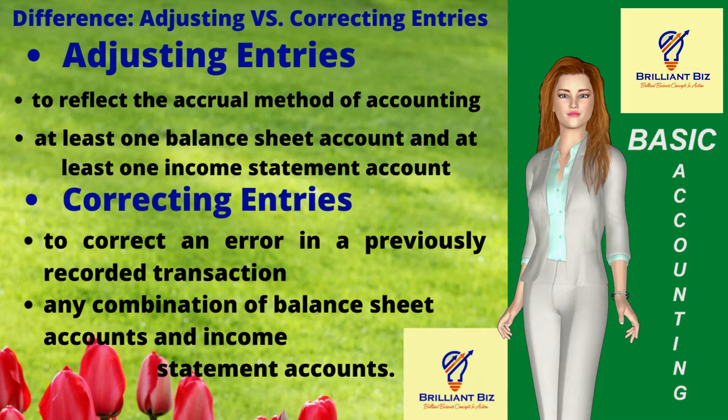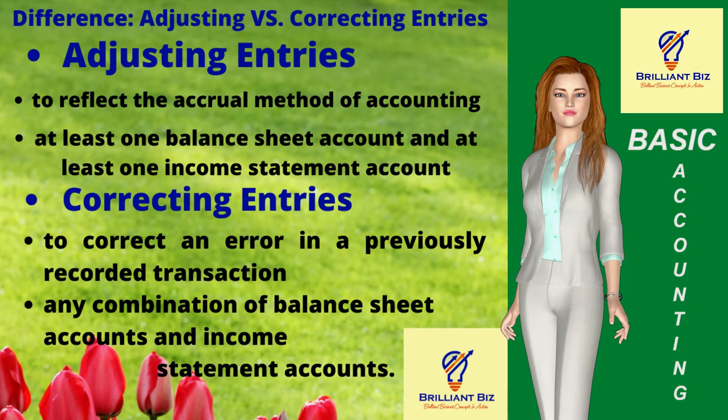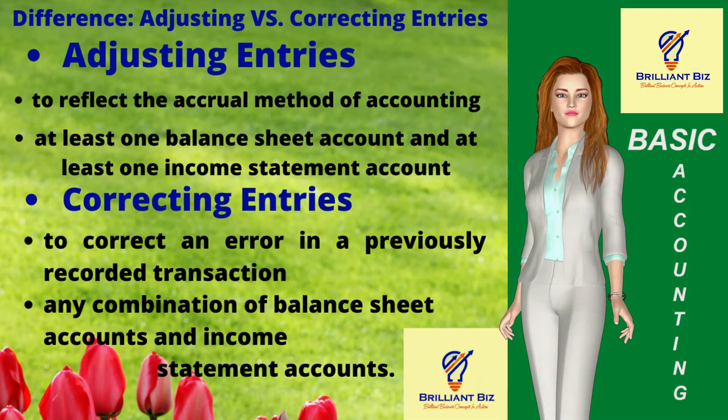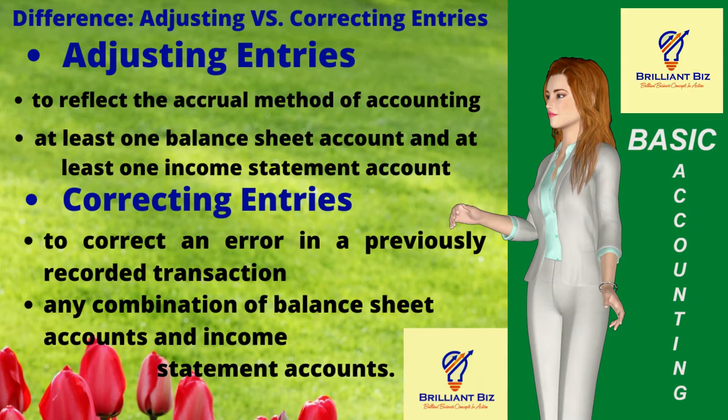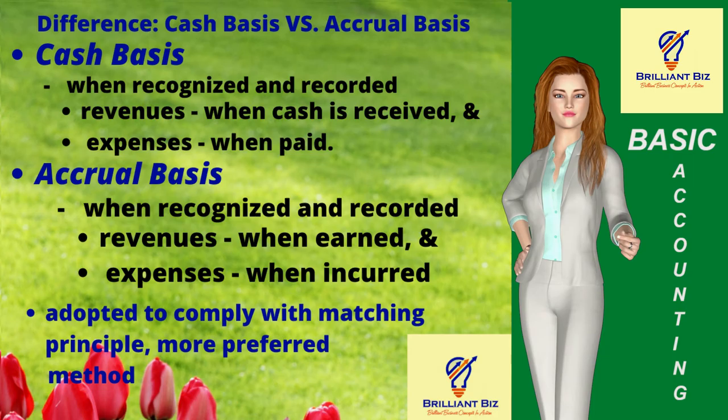The differences between adjusting entries and correcting entries lie in the purpose and the account titles involved. Adjusting entries are those required to reflect the accrual method of accounting and involve at least one balance sheet account and at least one income statement account, whereas correcting entries are those made to correct an error in a previously recorded transaction and can involve any combination of balance sheet accounts and income statement accounts.